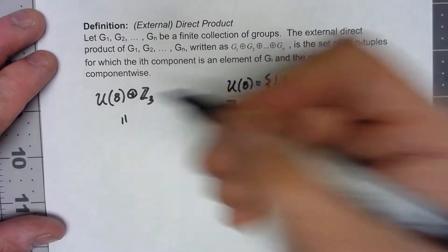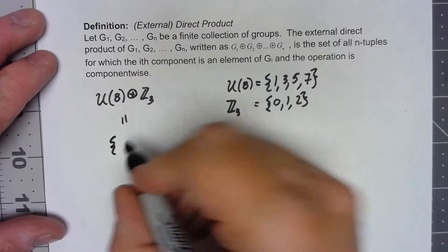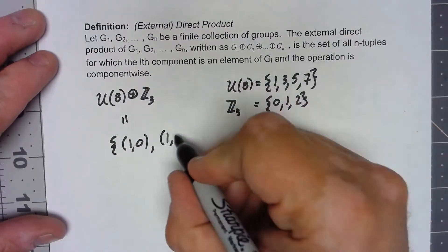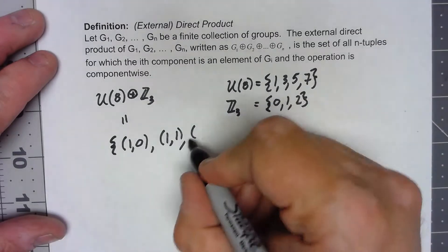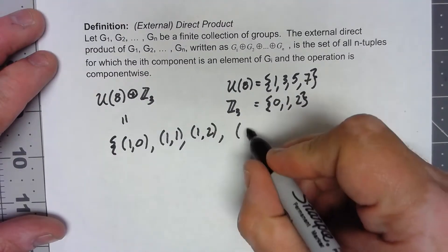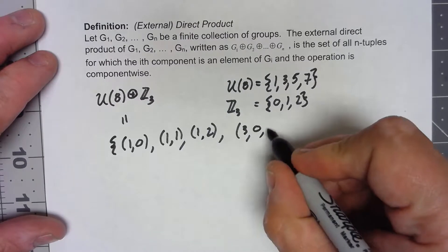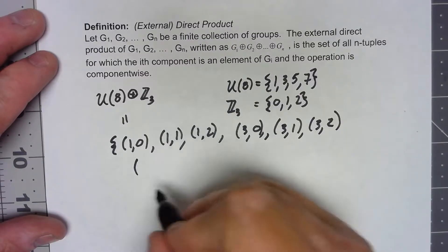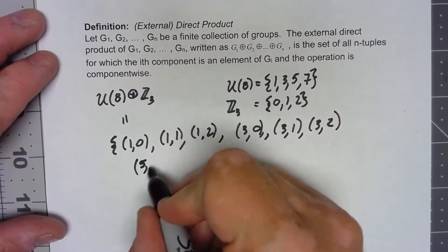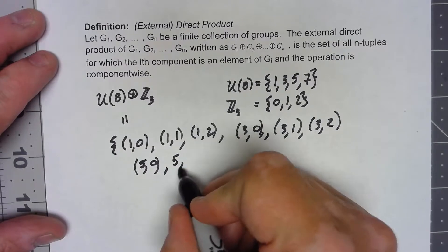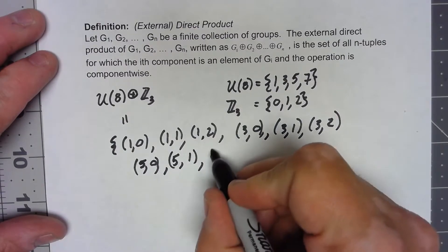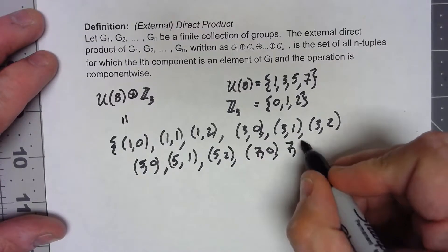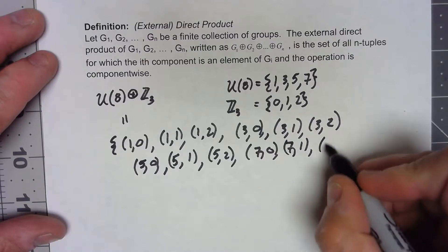So U(8) direct product Z3 is going to be (1,0), (1,1), (1,2), (3,0), (3,1), (3,2), (5,0), (5,1), (5,2), and (7,0), (7,1), (7,2).